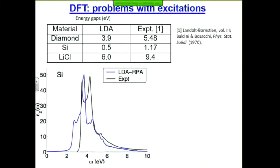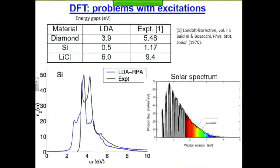So what's an electron volt between friends? Here's the solar spectrum. Most of the intensity is between two and three electron volts. So if you had only the theoretical calculation and no one had ever made silicon, you would have said silicon is a great solar absorber. In fact, it's not a very good solar absorber — it only directly absorbs photons in a very narrow range, and we have very few of those solar photons. So getting an electron volt off makes a big difference for material function.